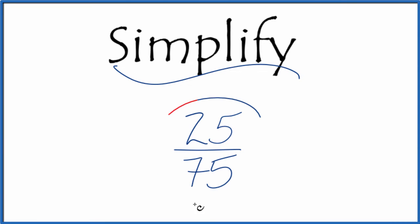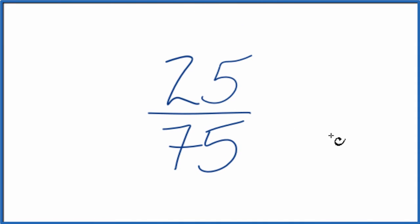Let's simplify the fraction 25/75 and here's how we'll do it. What we're trying to do is find another fraction that's equivalent, has the same value as 25 divided by 75, it's just that we have it in lowest terms.